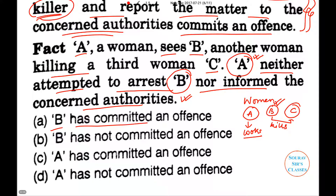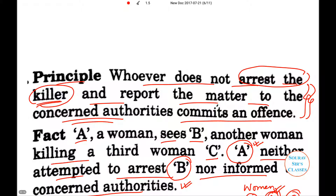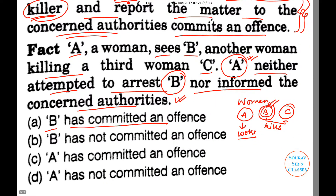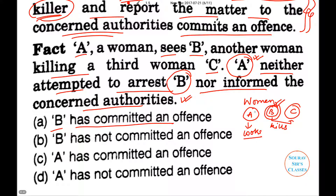Now, B has committed an offense — B has definitely killed C, so B has definitely committed an offense. But here we are talking about the person who observed, who is present at the crime where it is taking place, who witnesses the killer and the victim. B has not committed an offense in the context of this question — we are not concerned about B here; we are only concerned about A.